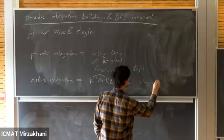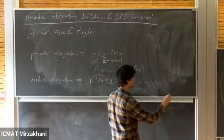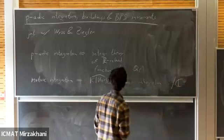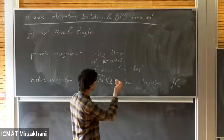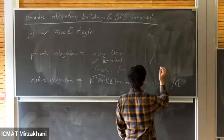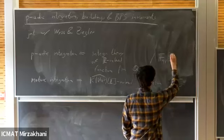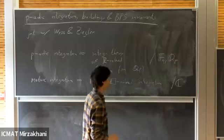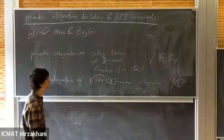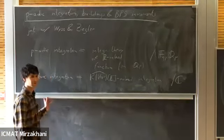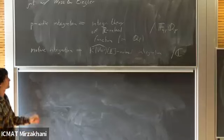Motivic integration is a more exotic version of integration theory. It's inspired by classical integration theory, but you're integrating in a different ring. The integrals will not land in the real numbers, but in Kontsevich-style motives — something like the K-theory group of varieties. Then you have to localize and complete, so it's more complicated. But it's a beautiful theory, and everything happens over the complex numbers, which is appealing for complex geometers. In p-adic integration, you have to leave the complex numbers for more exotic rings like finite fields and the p-adics.